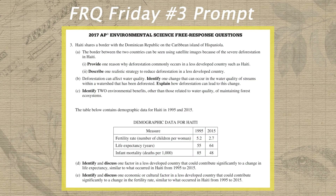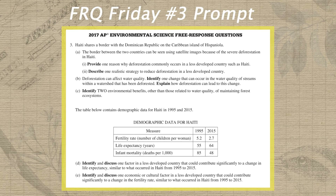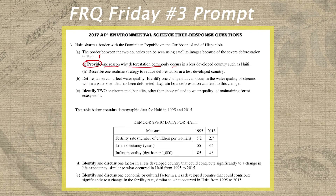Now that we've gone over last week's FRQ scoring guide and scored Madison's sample FRQ, let's take a look at this week's FRQ Friday prompt, which comes from the 2017 exam and focuses on both deforestation and some human population concepts from unit three. In letter A, we are asked about the border between Haiti and the Dominican Republic, which is visible using satellite images due to severe deforestation in Haiti. In part one, we need to provide one reason why deforestation commonly occurs in a less developed country such as Haiti. Our first step is circling 'provide' and writing a one above it, since 'provide' is similar to an identify prompt under the new CED design.